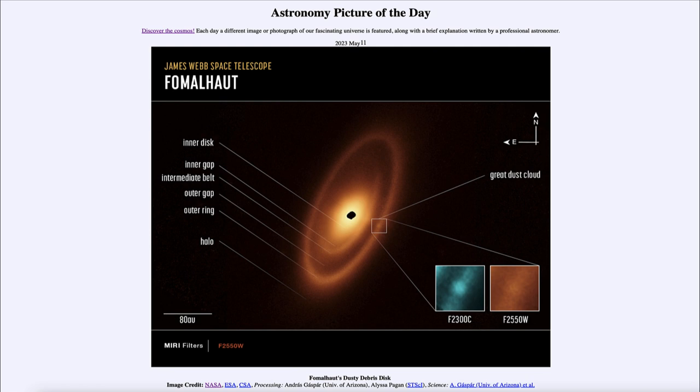But we're able to see this dust disk from 25 light years away, giving us kind of a glimpse into what our solar system may have looked like when it was just beginning to form four and a half or so billion years ago. So that was our picture of the day for May 11th, 2023, titled Fomalhaut's Dusty Debris Disk.